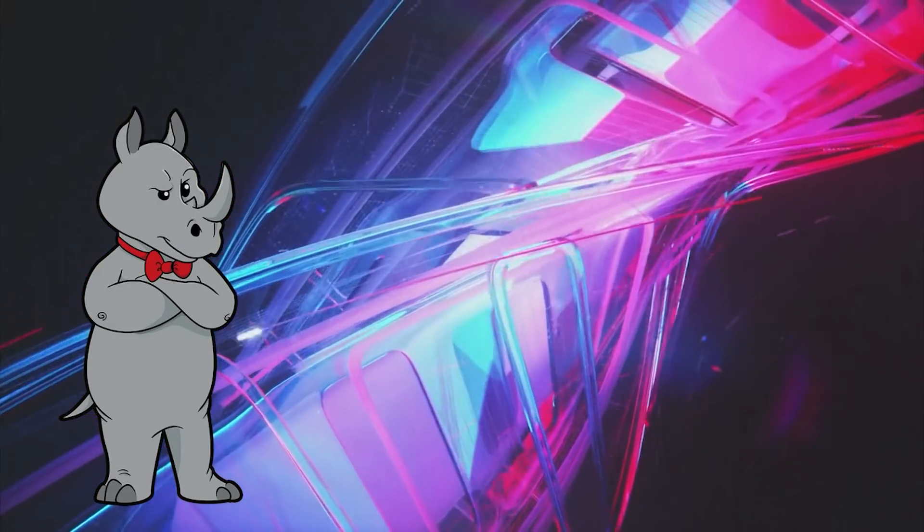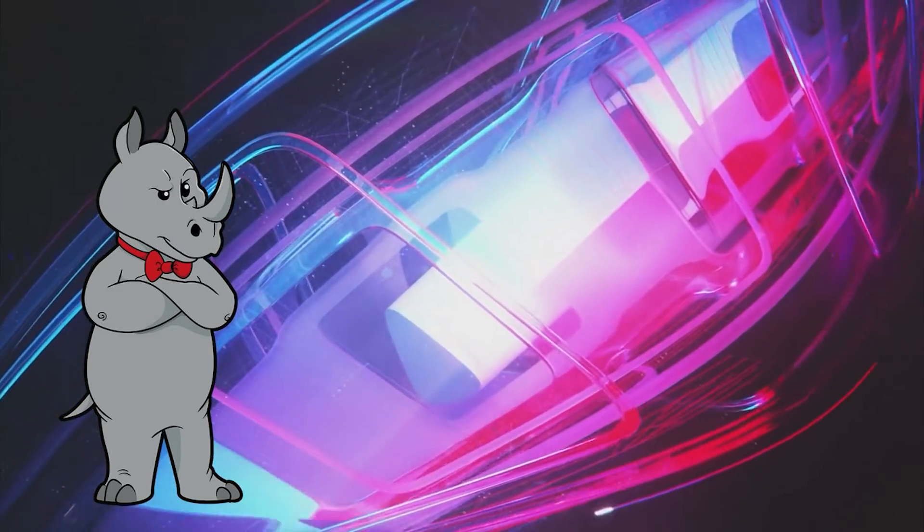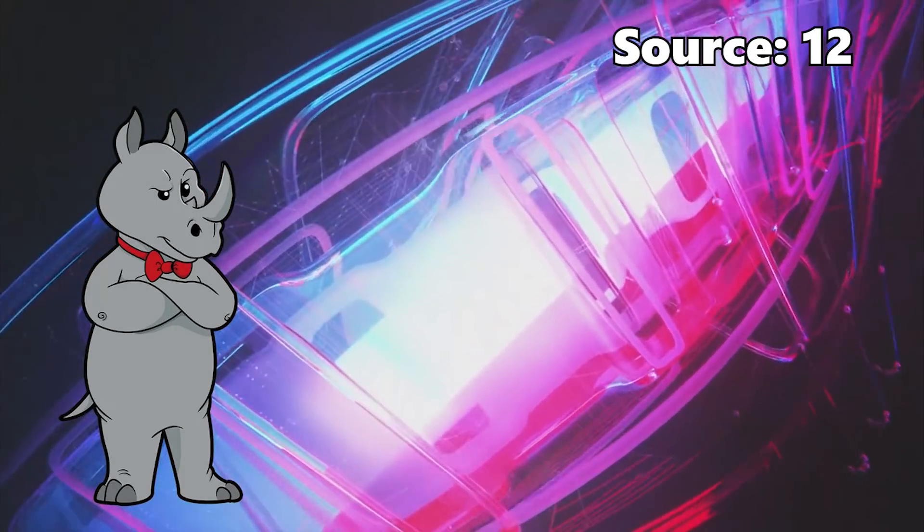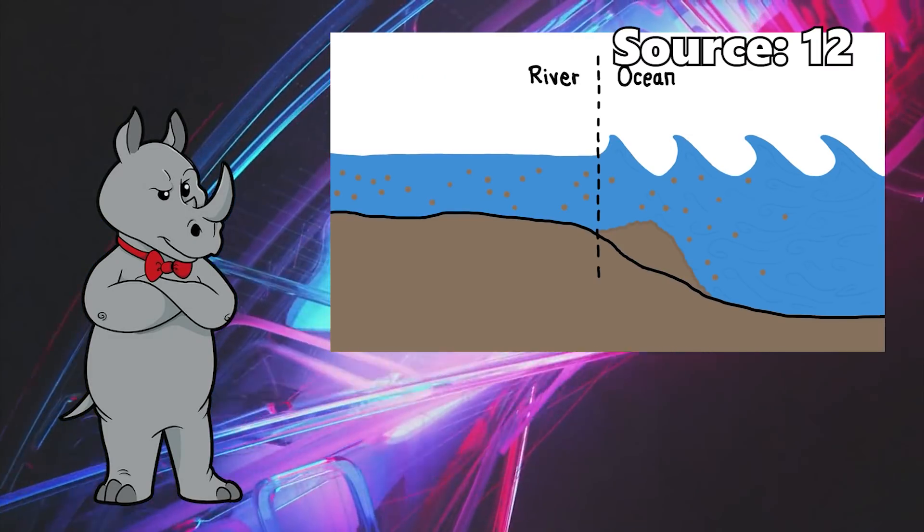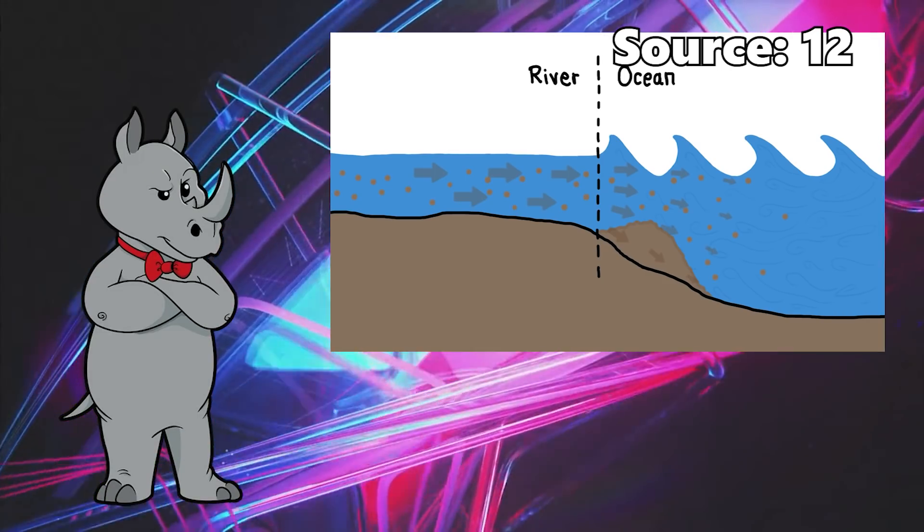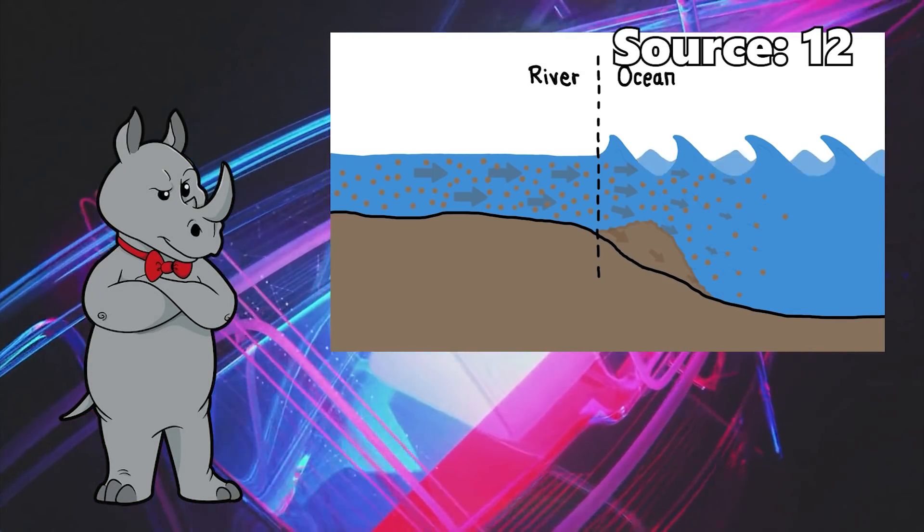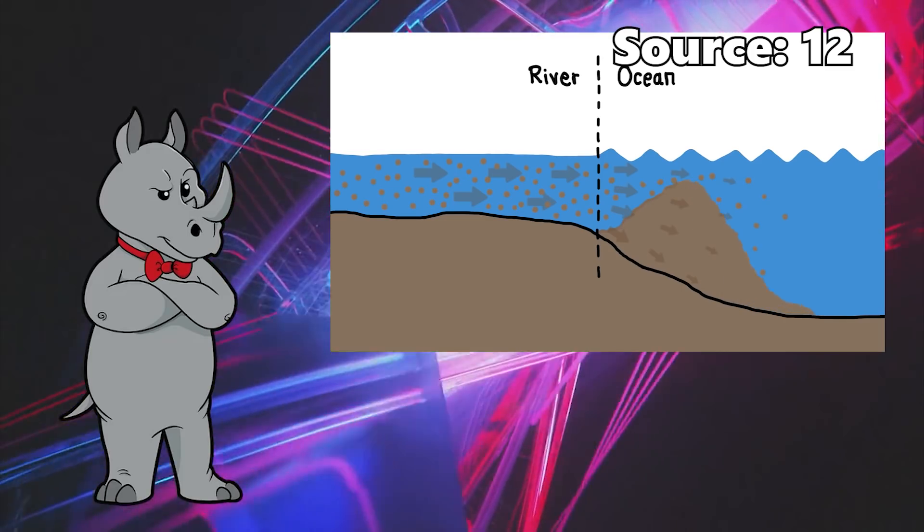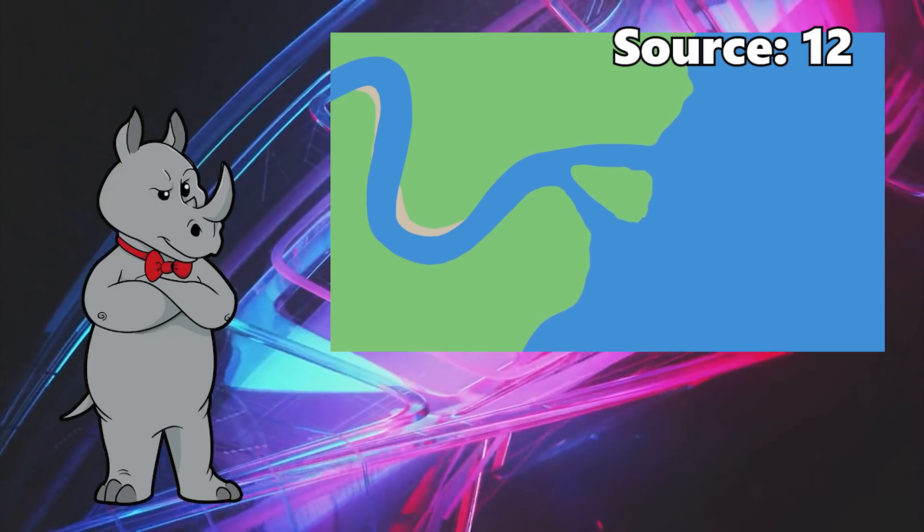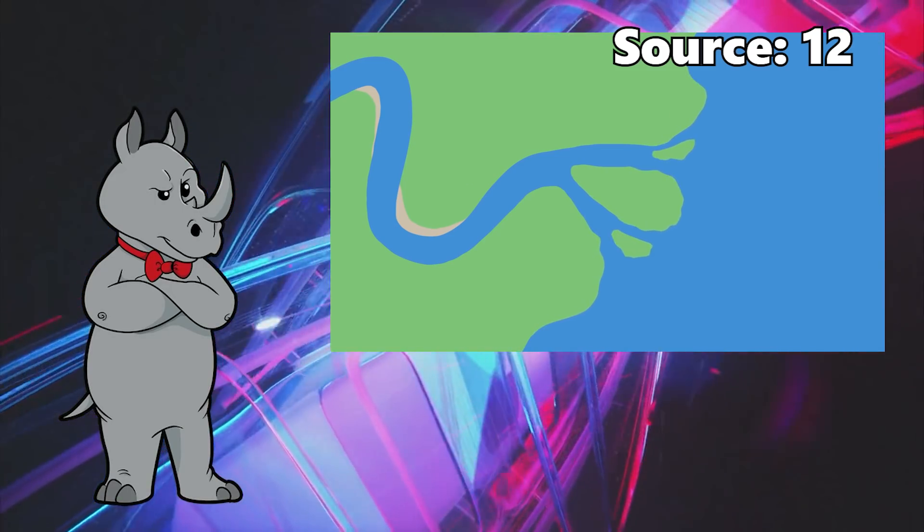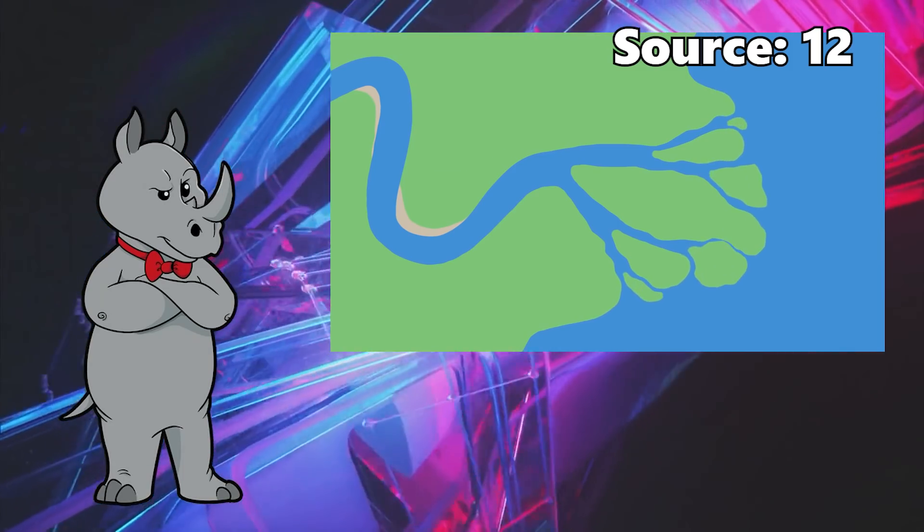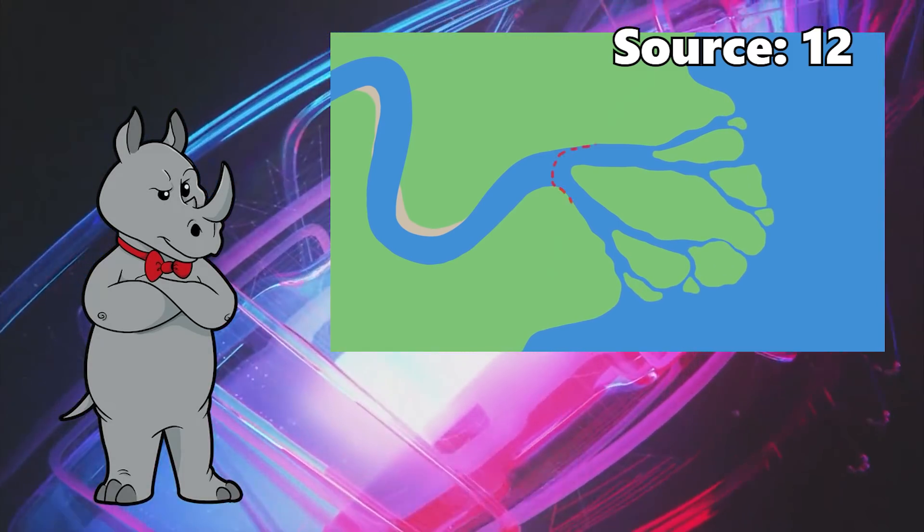And since we started with alluvial fans by comparing them to river deltas, let's just take a look at deltas next. Deltas happen where rivers meet larger bodies of water. Rivers carry sediment with them as they flow, and when they flow into a larger body of water, they slow down. This slowing causes them to drop the sediment that they had been carrying, creating a pile of sediment on the floor of the larger body of water. Eventually the sediment piles up to a point where it is above the surface of the water, and becomes dry land with the river forking around it. Then the two new forks begin the process again, and over time, as the river keeps forking around, the deltas become larger and more complicated.